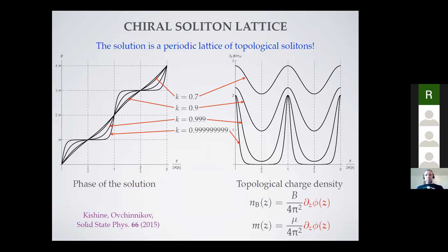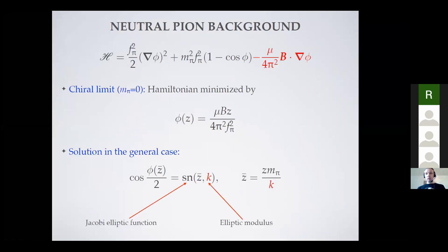The solutions for the neutral pion field can be parametrized by a single parameter called the elliptic modulus, analogous to the energy of the pendulum, taking values between zero and one. For values not too close to one, the pion field is roughly linear in the coordinate. For the elliptic modulus very close to one, you find a step-like structure. More physically interesting is the gradient of the pion field, which — multiplied by chemical potential — gives the interpretation of baryon number density.